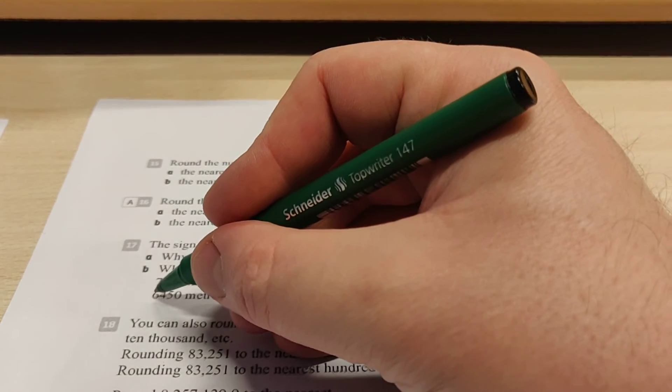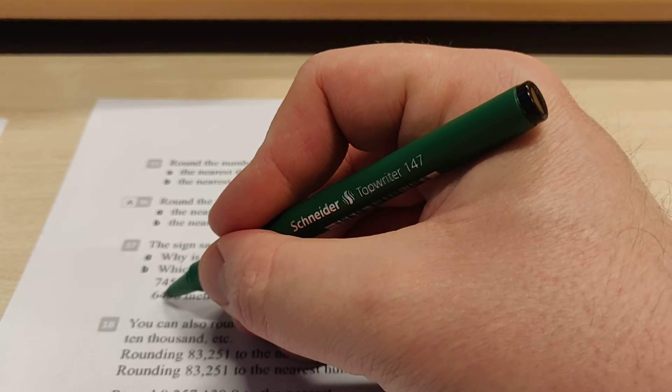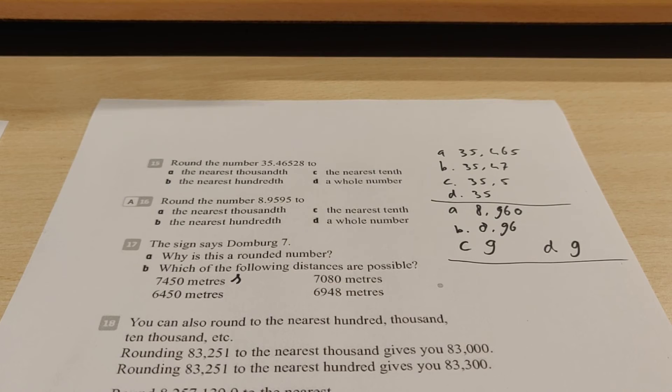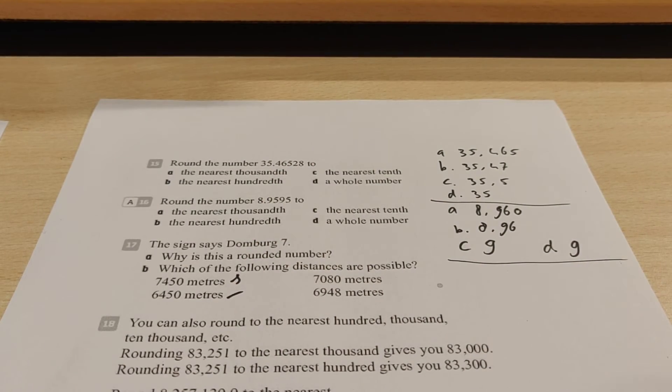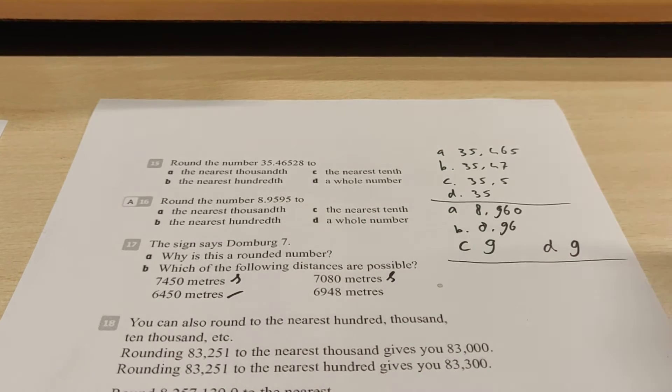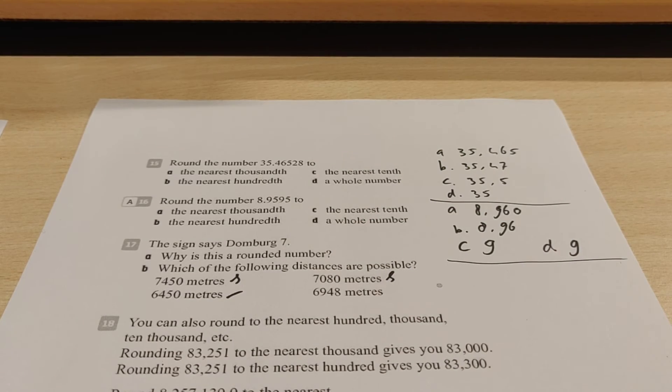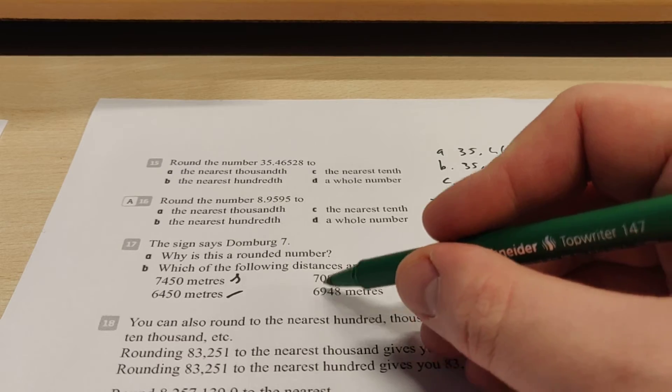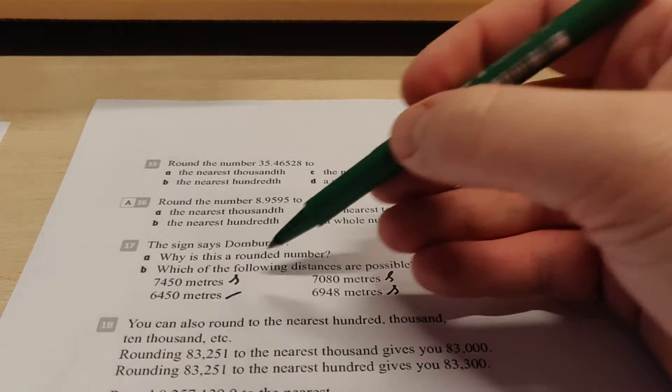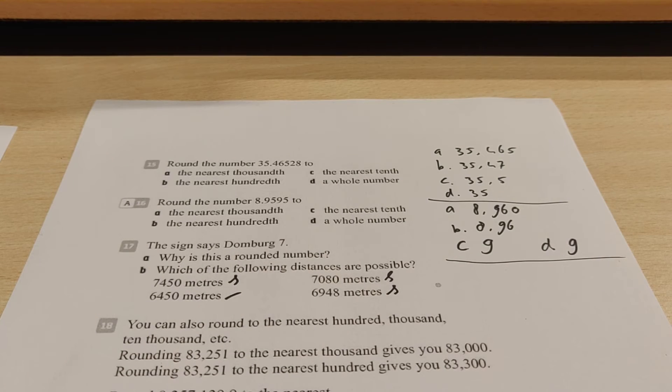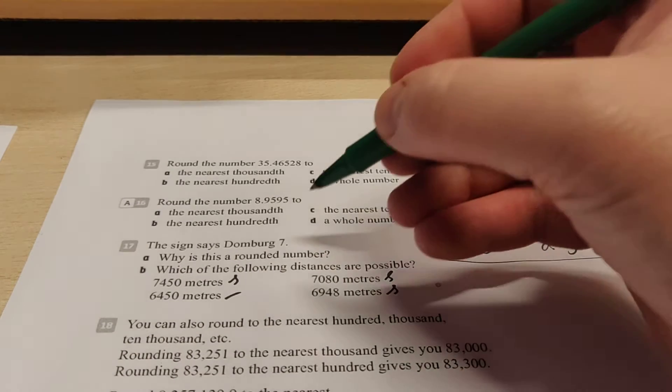Take a look at this one. This is 6,450. Well, because there's a 4 here, this one is actually closer to 6 kilometers. So that one is not possible. This one is actually already very close to 7. So that one is possible. And the next one is 6.9. So you can round off upwards. So this is also possible. So these three are all possible distances to Domburg. And when you round it off, you get 7 kilometers.